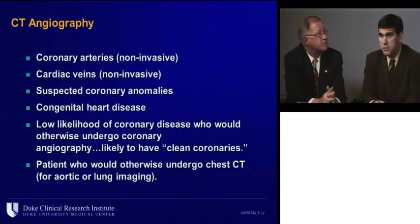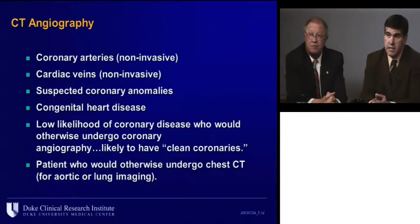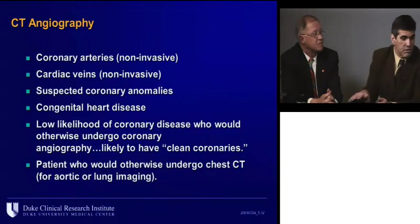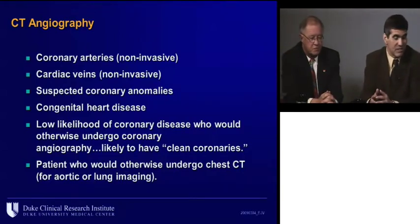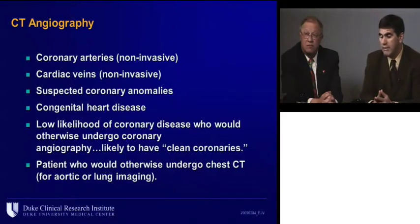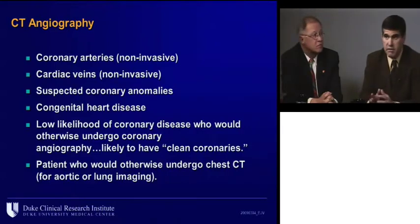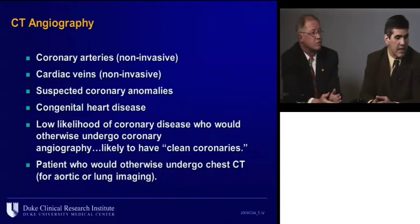Moving to CT angiography — this is a new kid on the block and the technology is still advancing. Where it is most commonly used is when there are coronary anomalies suggested — you can follow the coronary anomaly throughout its course, which is helpful for people making decisions about how to approach patients either percutaneously or surgically. In patients with a low likelihood of coronary disease where you want to avoid the risks of an invasive procedure, CT angiography — assuming there's not high calcium indices — is probably fine for making decisions.